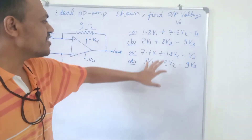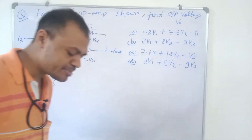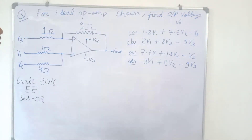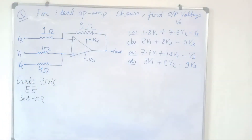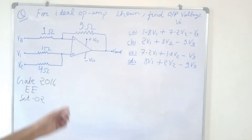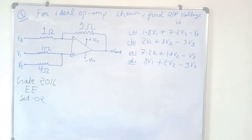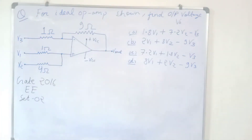The coefficient of V1 is different in all the options and the coefficient of V2 is also different in all the options. So if we can find the output voltage due to either V1 or V2, we will get the correct answer. The simplest method will give us the answer in hardly 30 seconds, which is important since we need to maintain speed in the GATE exam.